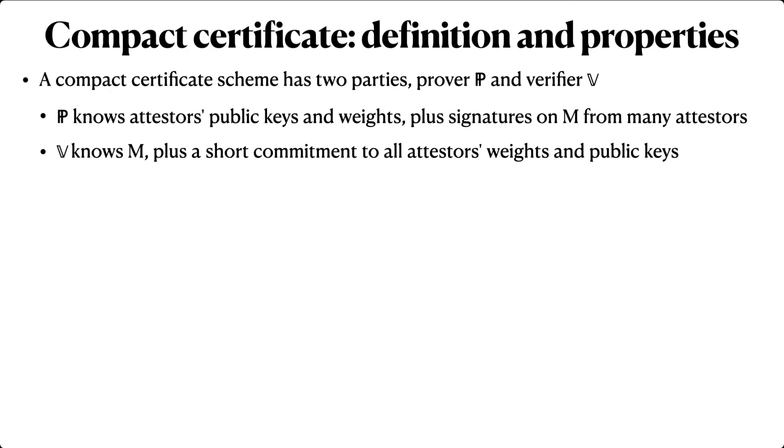In this protocol, the prover knows all of the attester's public keys and their assigned weights, and the verifier knows a short commitment to the keys and weights. The prover's goal is to convince the verifier that it knows signatures on a message M whose total weight is greater than some value T.